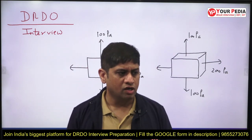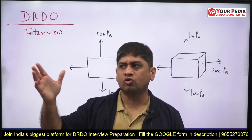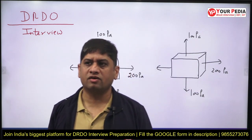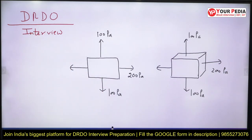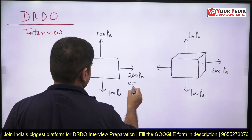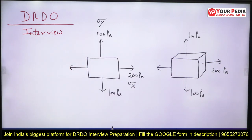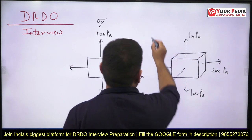What is Mohr's circle and why do we plot it? For better visualization — the radius of Mohr's circle gives us maximum shear stress. Now comes the actual DRDO question. They will give you a two-dimensional diagram of a body subjected to sigma_x and sigma_y, both tensile, where sigma_x is the major principal stress and sigma_y is the minor principal stress, plus a third stress sigma_z which is zero.